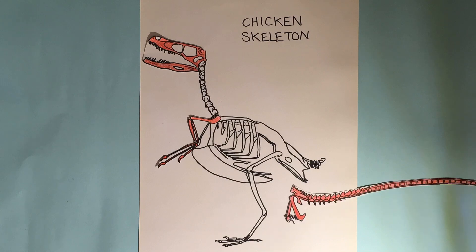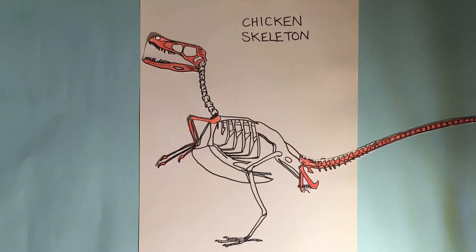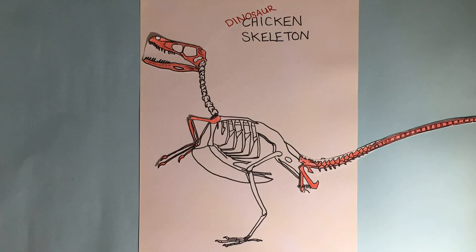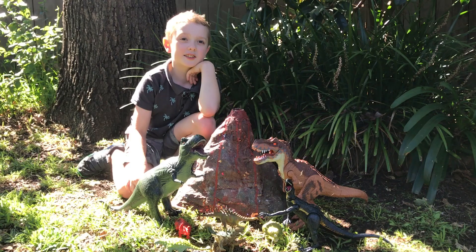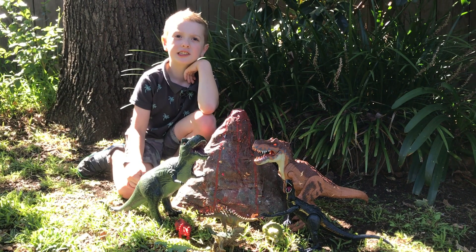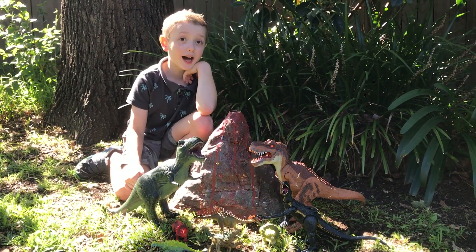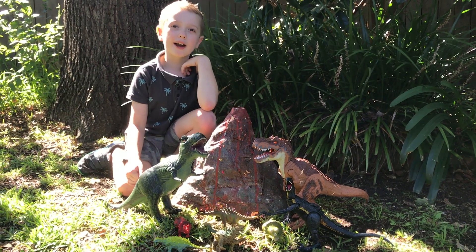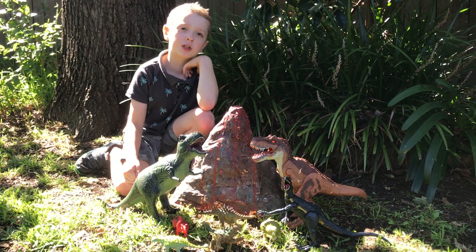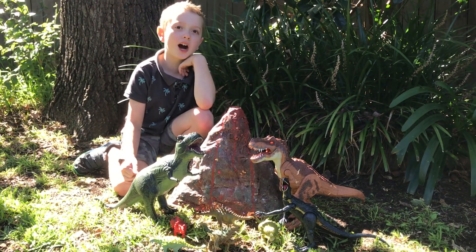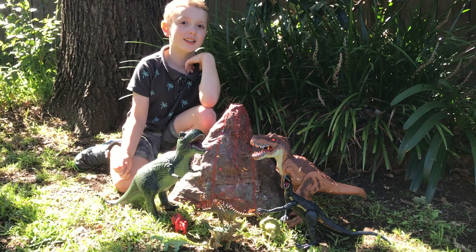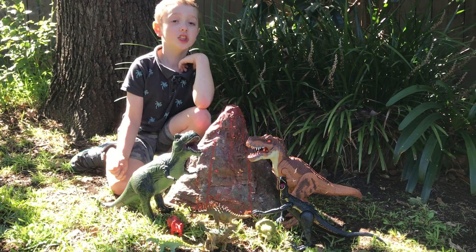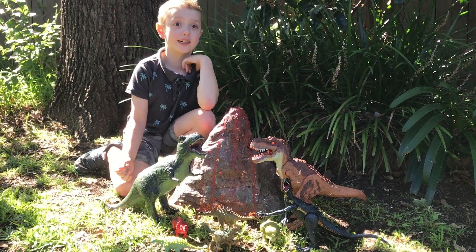Scientists could engineer a chicken to have arms, a tail, or teeth so it can look more like a dinosaur. The science used in Jurassic Park might be unrealistic, but the writers have sparked millions to ask 'what if?' That can only lead to new discoveries.